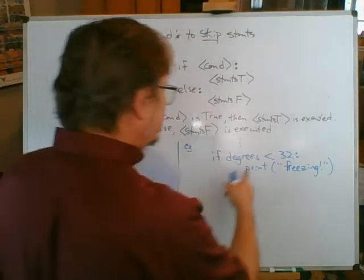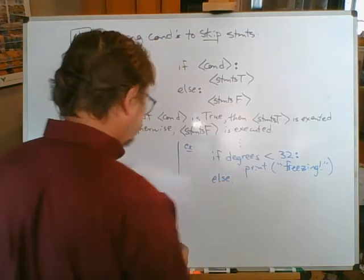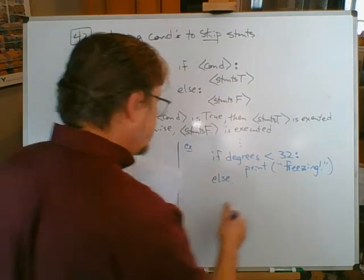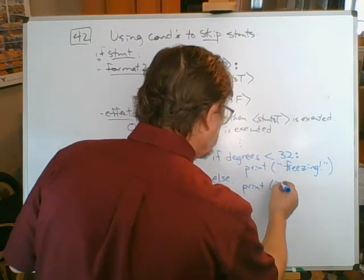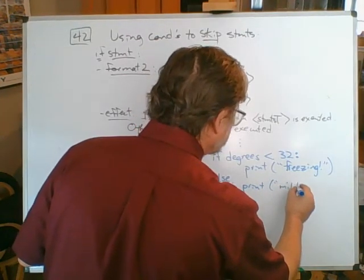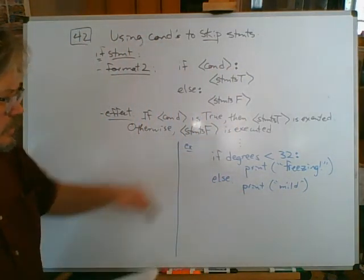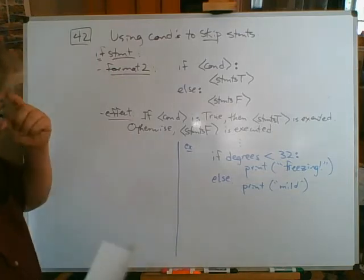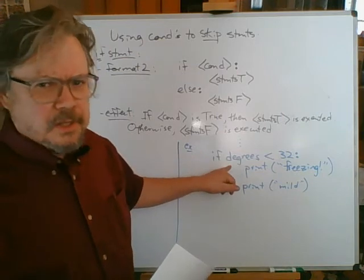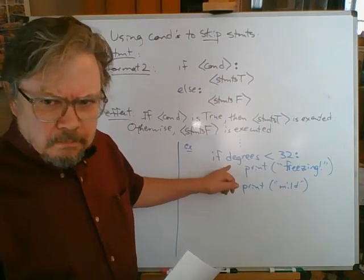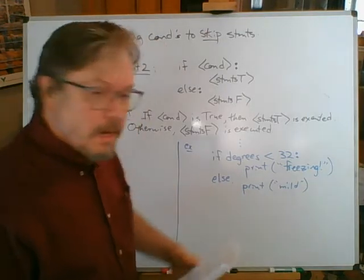Then I'll unindent beneath that and put else, and my statement's false will be print, double quote, mild, close double quote. Now that's four separate lines. I might have squashed them together too much. But this says, if degrees less than 32, print freezing, indented underneath. Indentation is so important in Python, much more so than in most other high level languages. Else with a colon, print mild.